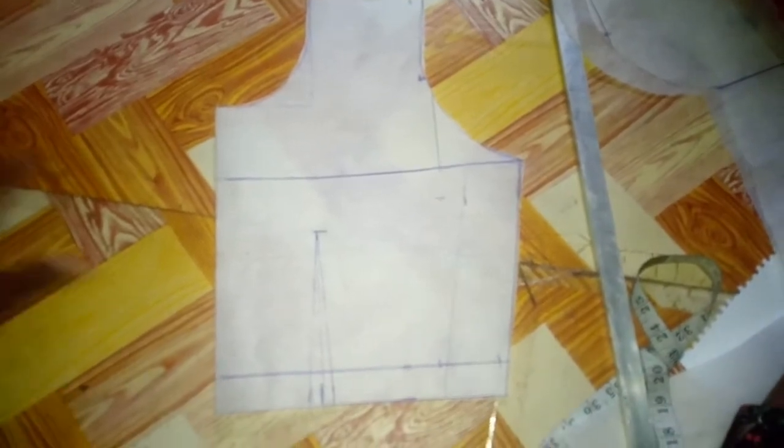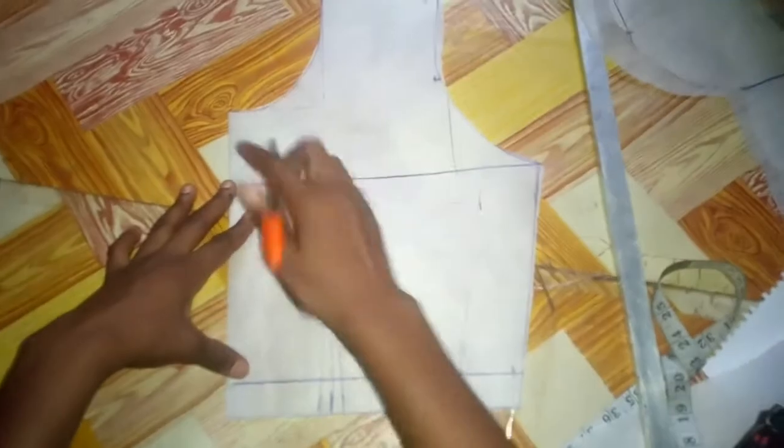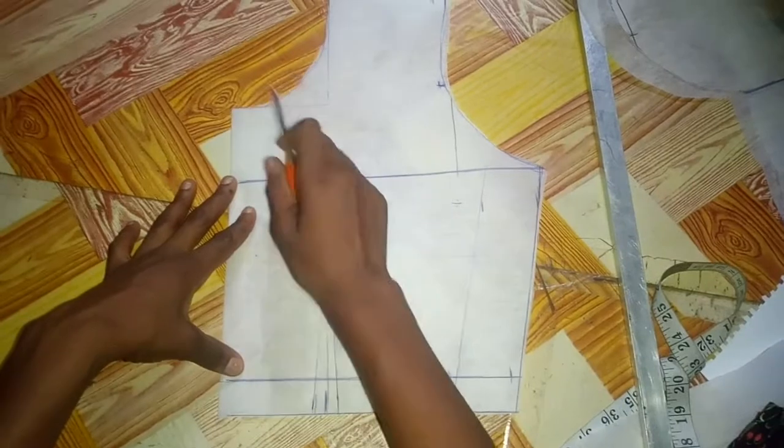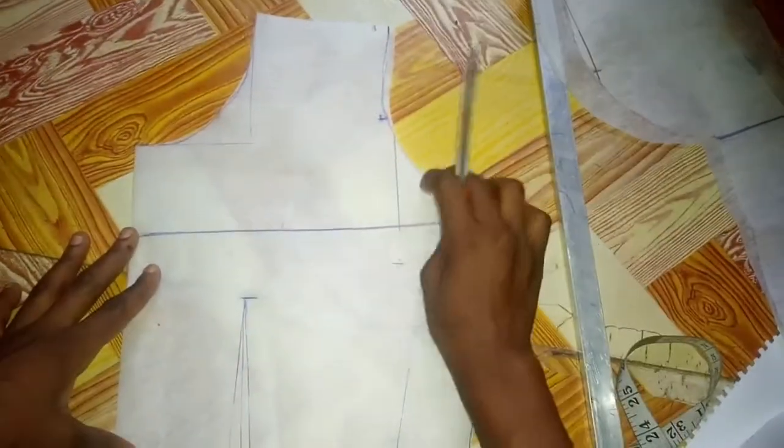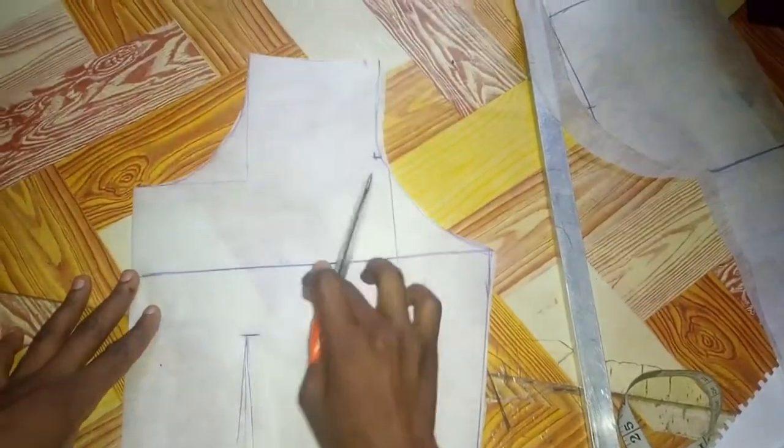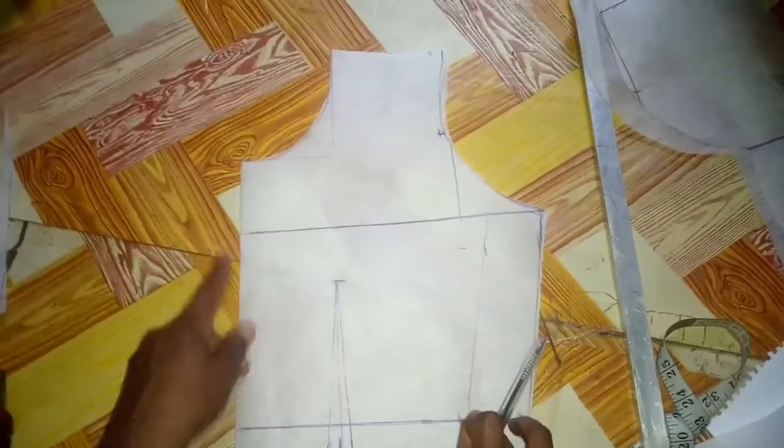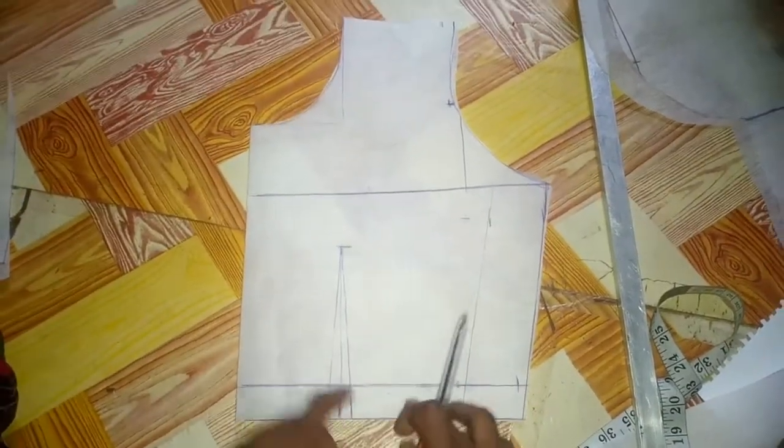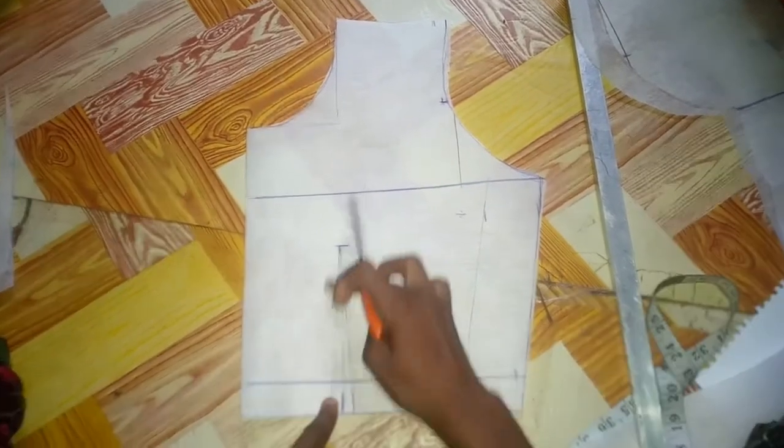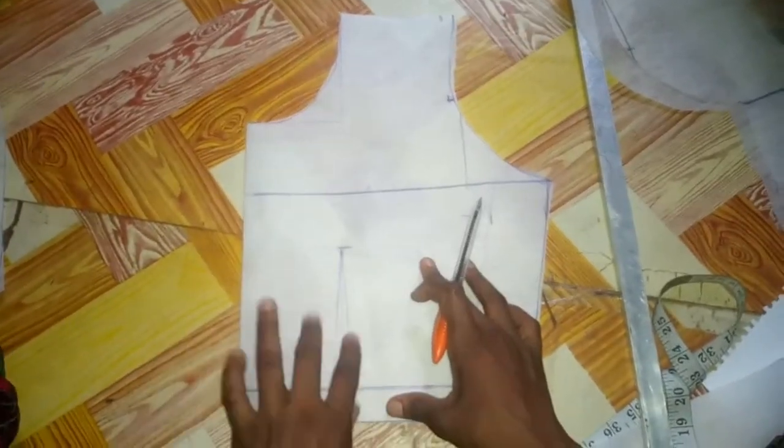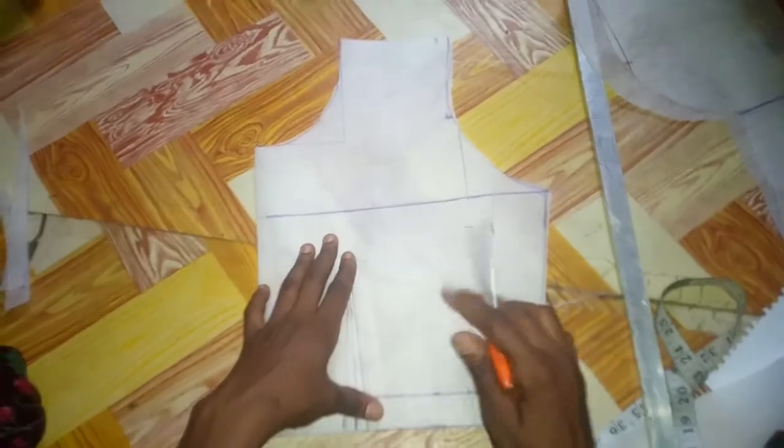So yeah, this is my neckline, neck region. This is my armhole. From here to here is my chest line, half length and allowance, and this is the normal dart that I drew.